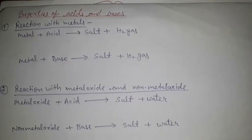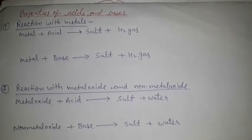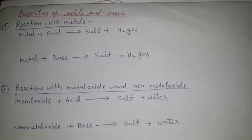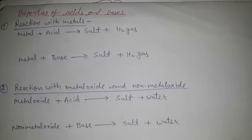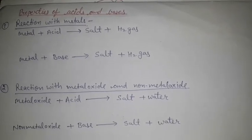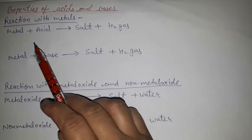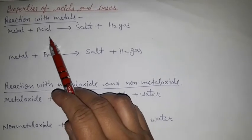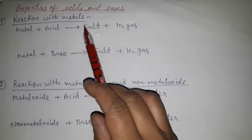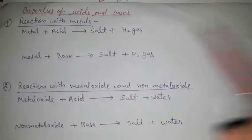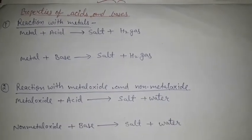Now we will discuss the properties of acids and bases. First: reaction with metals. When a metal reacts with acid, it forms salt and hydrogen gas.